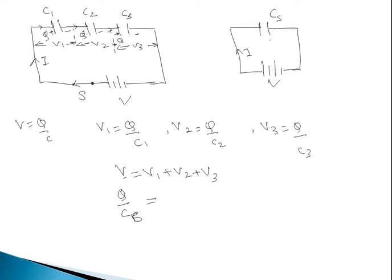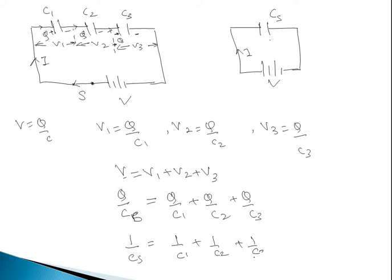Substituting, we get Q/Cs = Q/C1 + Q/C2 + Q/C3. Taking Q as common, we get 1/Cs = 1/C1 + 1/C2 + 1/C3. If there are n number of capacitors connected in series, then the equation will be 1/Cs = 1/C1 + 1/C2 + 1/C3 + ... + 1/Cn.